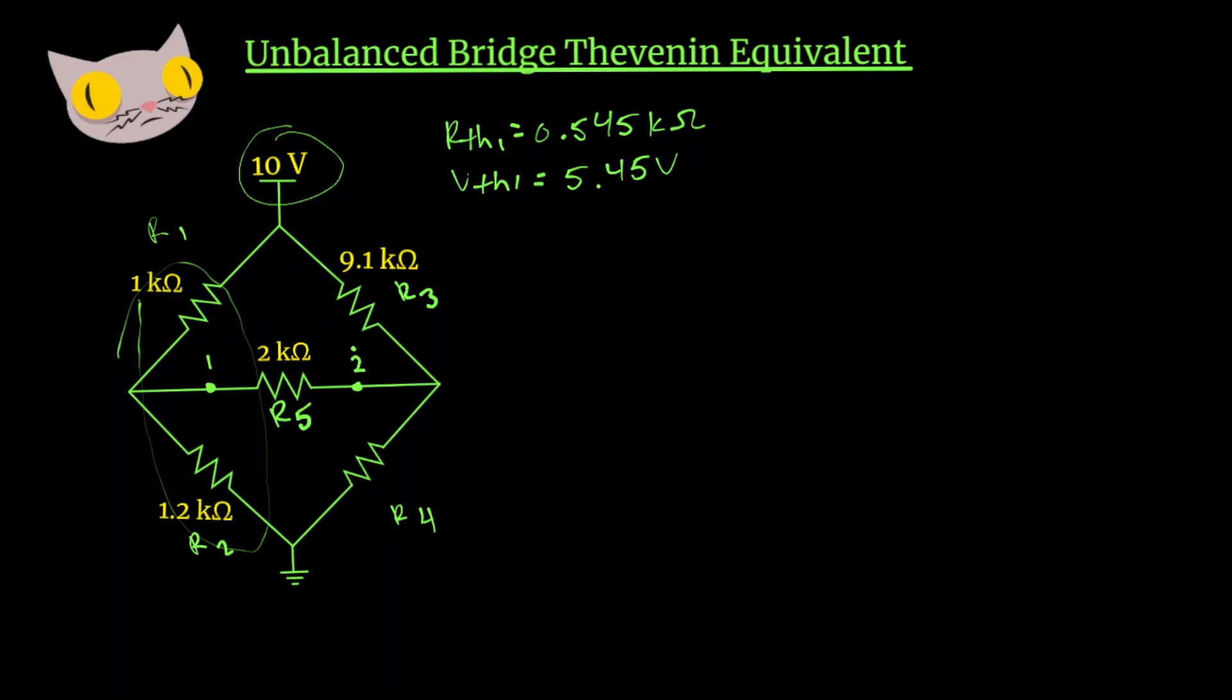So we get 10 volts times 1.2k over 2.2k and that's going to give us 5.45 volts. Now let's go to the right of node 2 and find the Thevenin resistance between R3 and R4.